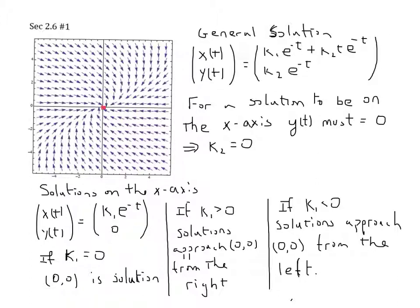If k₁ is bigger than 0, the solutions approach (0,0) from the right. If k₁ is a number bigger than 0, then my solutions will start somewhere on the right with a positive k₁ because positive number times e to the minus t is a positive number. We start here, and as time evolves, e to the minus t goes to 0, taking us in this direction. So solutions come in from the right, approach (0,0), but never reach it. And I'll draw it all the way up to the origin, even though it never quite reaches it.